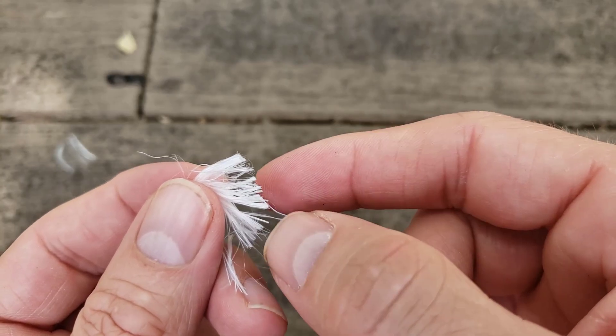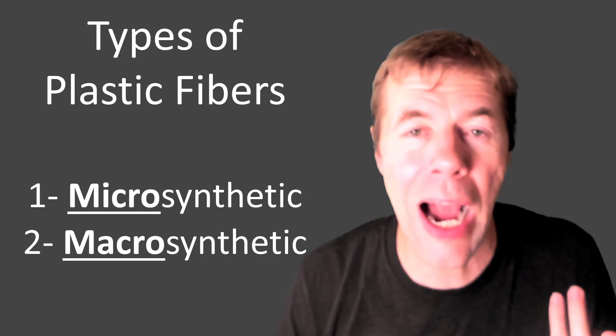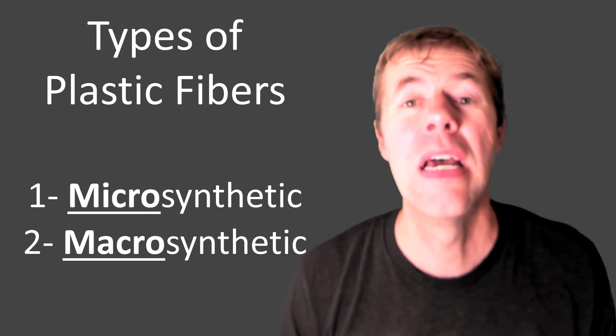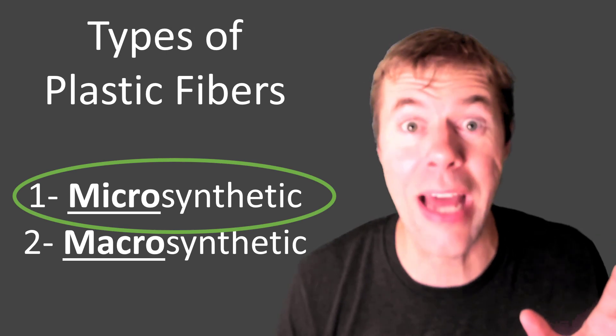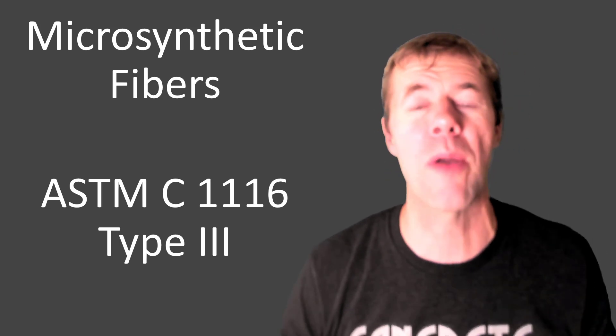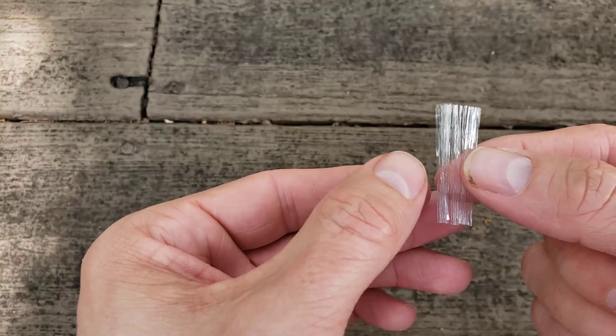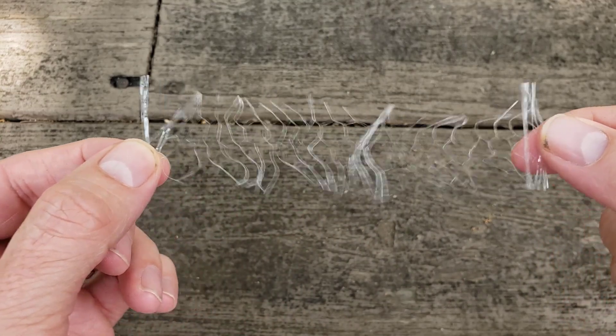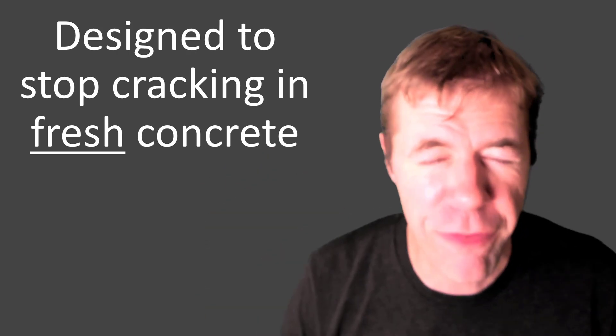There are microsynthetic and macrosynthetic. Micro, that means small diameter, about the size of a hair. And macro, about 10 times or so larger, maybe even larger than that in diameter. But we're going to be talking about microsynthetic fibers today. So these are defined by ASTM C1116 or type 3 fibers. And I've got some pictures of them here in action. They're pretty sweet. They're pretty flexible. And look at these sweet forms they form.